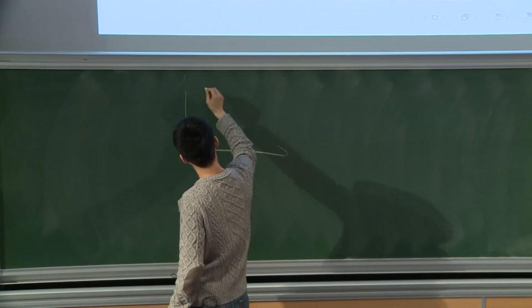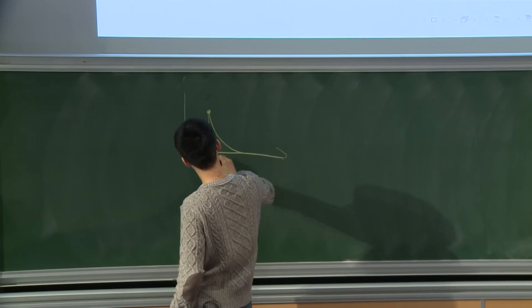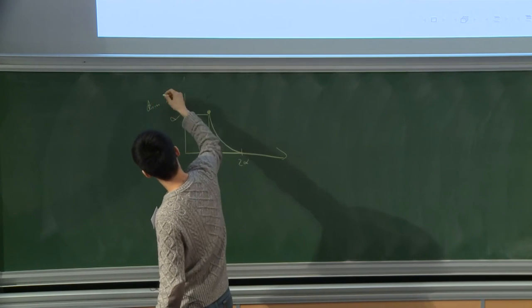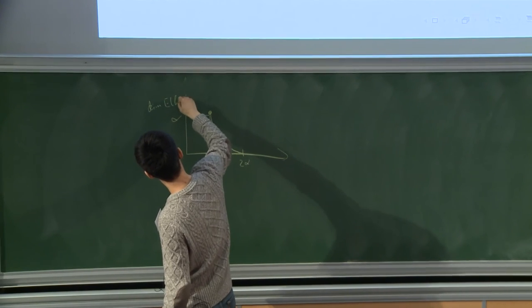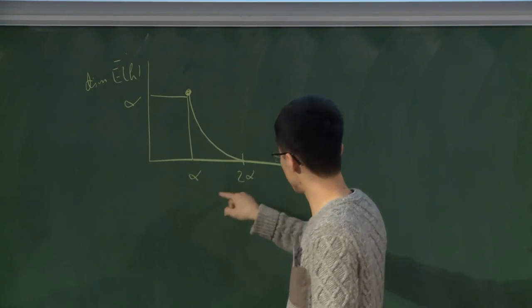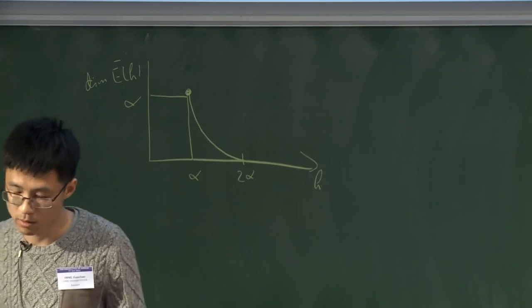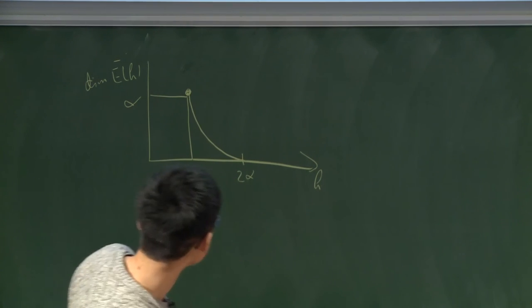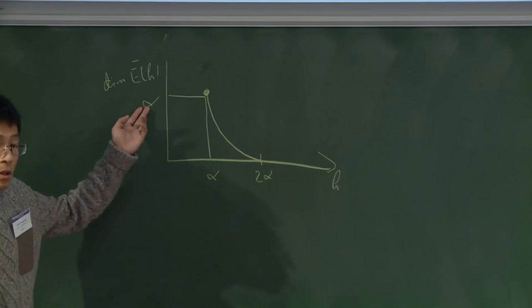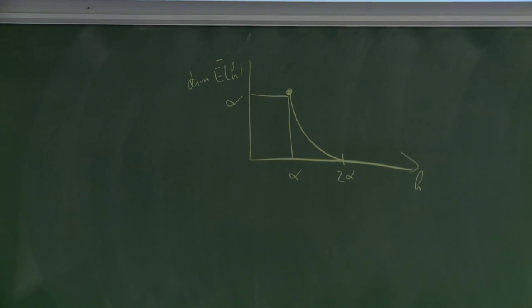If I draw a picture of this spectrum, it will be like this. This is the Hausdorff dimension of the set. This is all the possible value of H. For the other values, larger than two alpha, smaller than alpha, this is only a simple empty set. And this alpha corresponds to the Hausdorff dimension of the range of the alpha-stable subordinator.